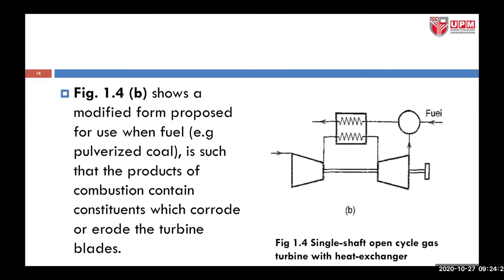Figure 1.4B shows another modified form proposed for use when fuel such as pulverized coal is being used. Instead of having the combustion chamber connected directly to the heat exchanger, the air is heated by the heat exchanger before being supplied to the turbine — the air is pre-prepared, its energy and temperature increased — and then it is supplied to the combustion chamber, so the incoming air for the combustion chamber is at a much higher temperature compared to the earlier arrangement.